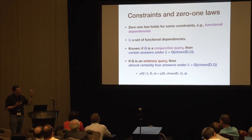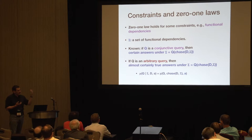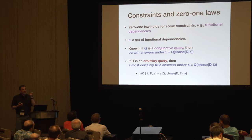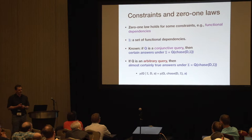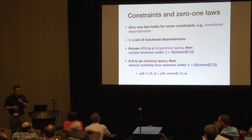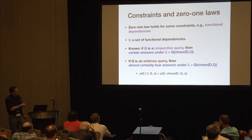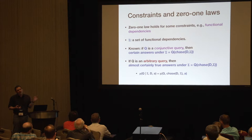Sometimes with certain constraints, we can recover the 0-1 law. One example from the paper is functional dependencies. It was known that to find certain answers to a conjunctive query under functional dependencies, you chase the incomplete database with the dependencies and then apply the query. Now for an arbitrary generic query, the same equality is true, except that now I get almost certainly true answers — I can use the same chase trick, and the only difference is that answers are now true with probability one.